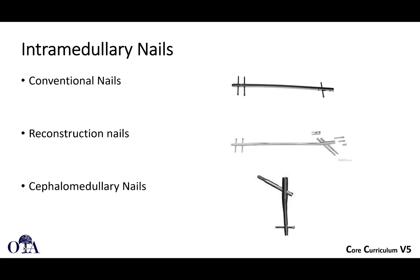Intramedullary nails come in many types. A conventional femoral nail is one example. Reconstruction nails typically have two screws that go up into the femoral head. Cephalomedullary nails, made by many different companies, are used for intertrochanteric or subtrochanteric femur fractures and feature a large lag screw, blade, or double-screw device going into the femoral head, often with a telescoping mechanism to allow compression.